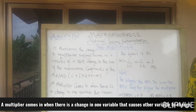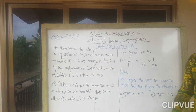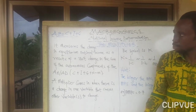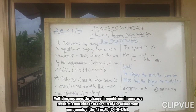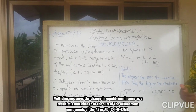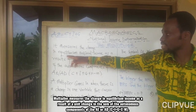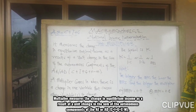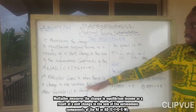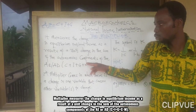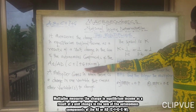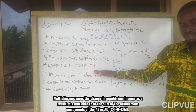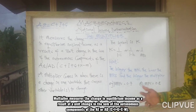So the multiplier is an instrument used to measure the change that occurs in the equilibrium national income as a result of a change in any of the autonomous components. These are the autonomous components.